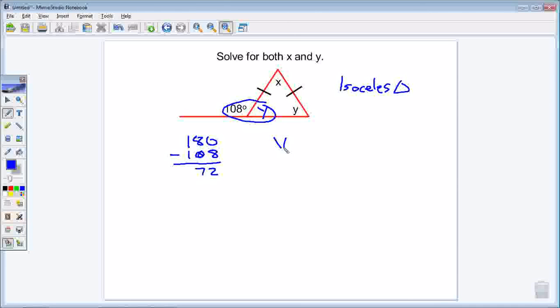Therefore, I know that y equals 72 degrees. Now, again, I have to be careful. I have 72 for this y and for this y.